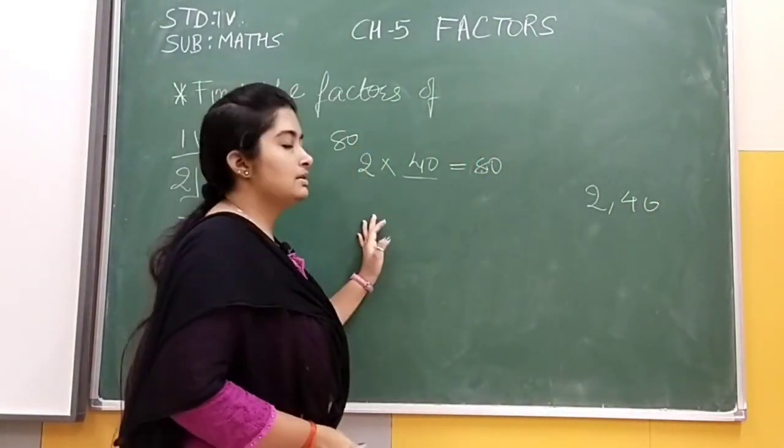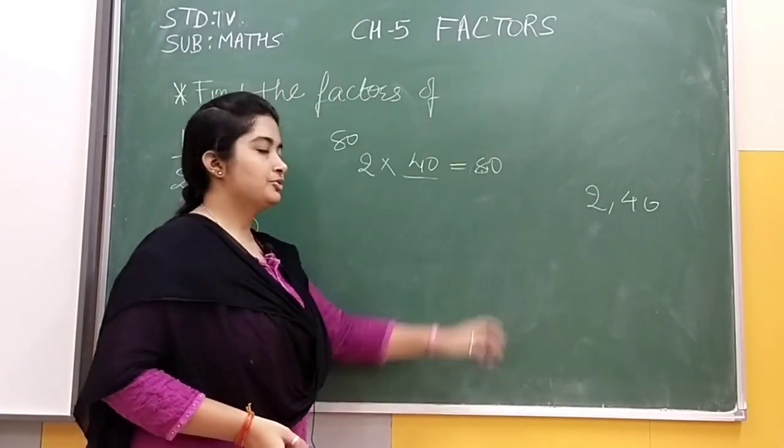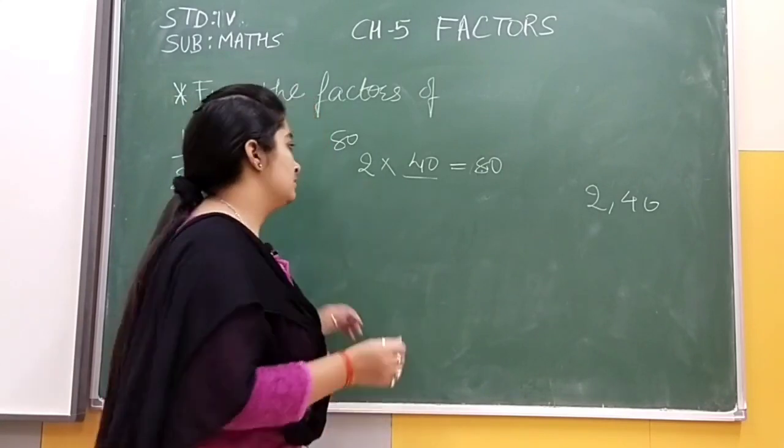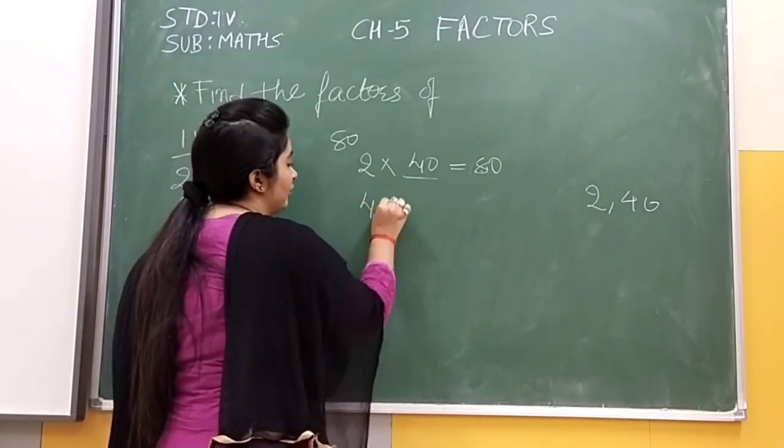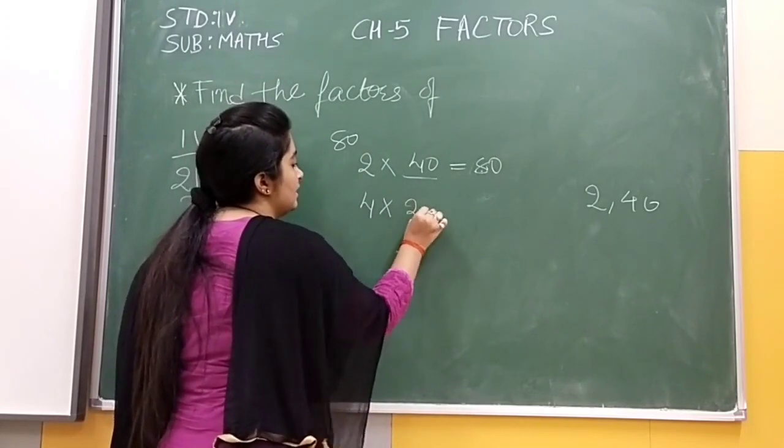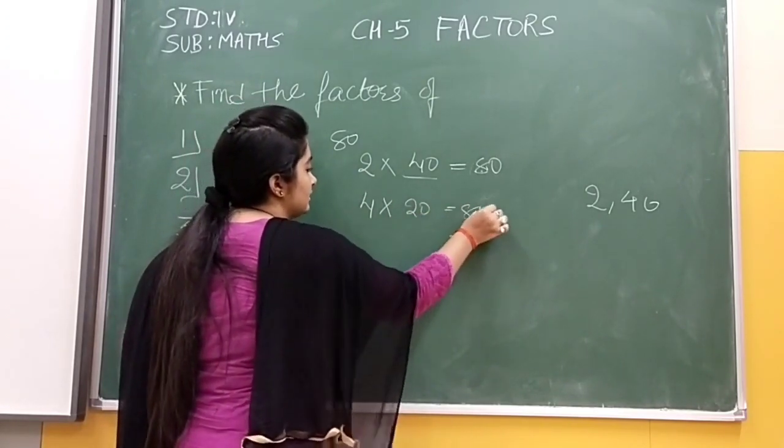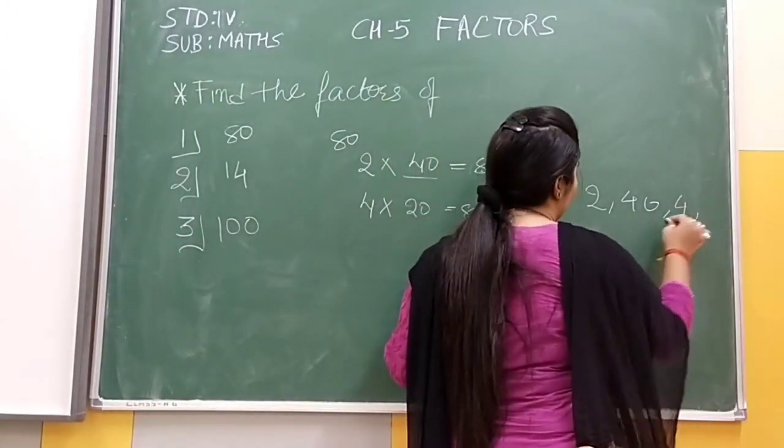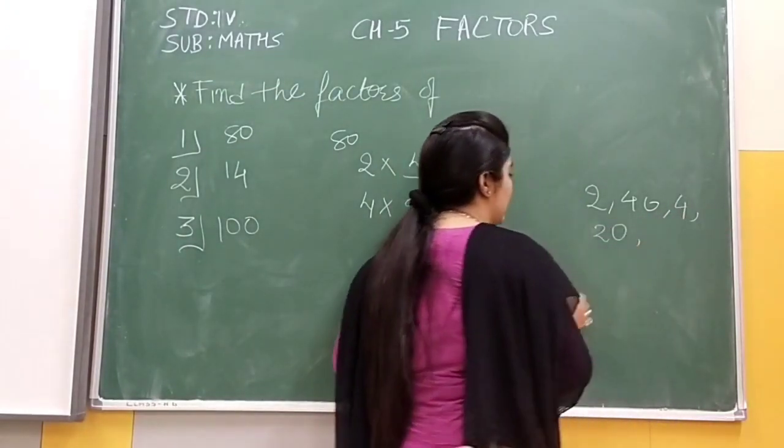Now 3 we can't take because 80 is not divisible by 3. So we will take 4. 4 into which number is 80? 4 into 20 is 80. Then we get two more factors: 4 and 20.